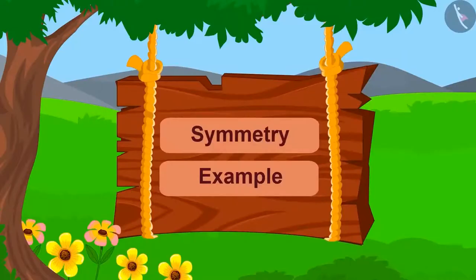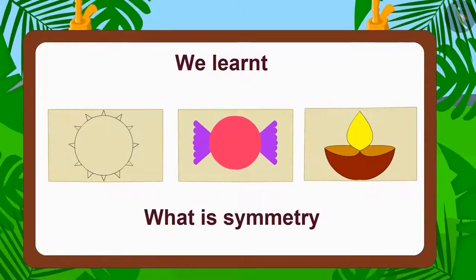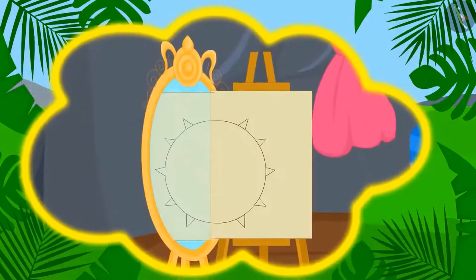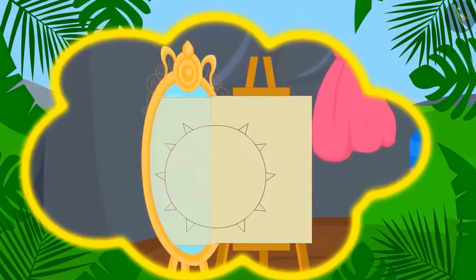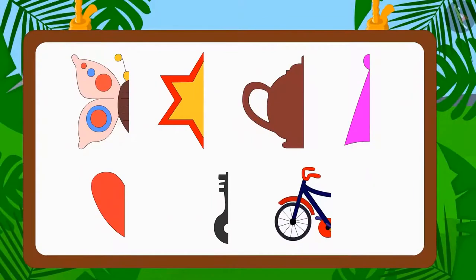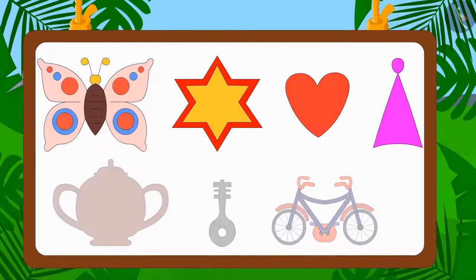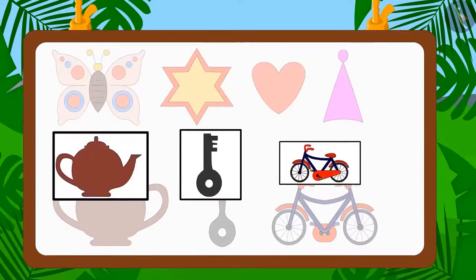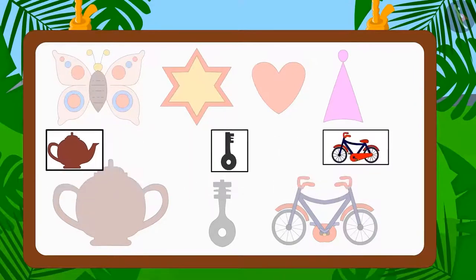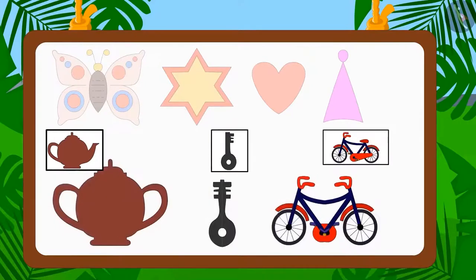In the previous video we learnt what is symmetry. Do you remember Shere Khan's magical mirror? Can you identify which of these incomplete images will become a complete image in the mirror? These are the images that will be complete in the mirror because they are made of two similar parts. And these images will not be complete in the mirror because they are not made of two similar parts.